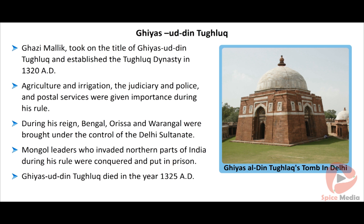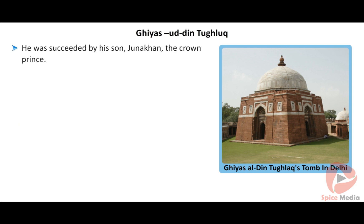Giyasuddin Tughlaq died in the year 1325 AD. He ruled only for five years. His untimely end came when he was crushed to death when the stage he was standing on collapsed at his victory celebrations in Bengal. He was succeeded by his son Junakan, the crown prince.